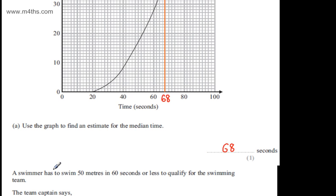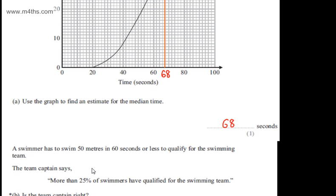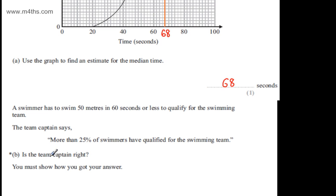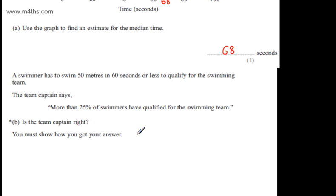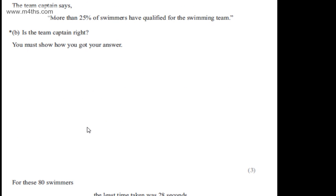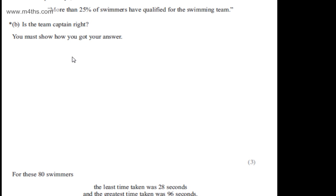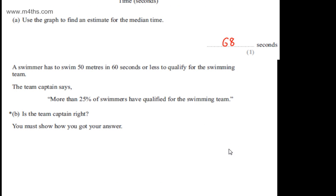We're now told a swimmer has to swim 50 metres in 60 seconds or less to qualify for the swimming team. The team captain says more than 25% of swimmers have qualified for the swimming team. In part B, it says is the team captain right? You must show how you've got your answer. The question carries three marks.